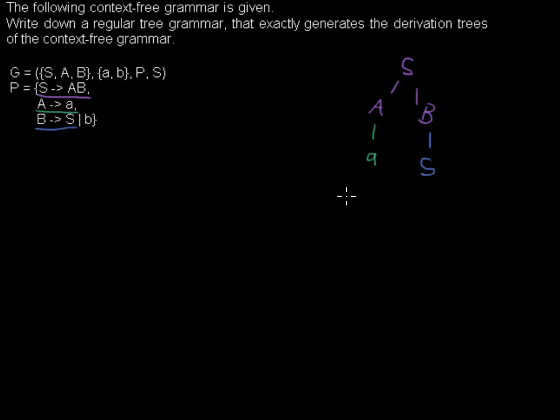Then I will take the first rule again, deriving S to A and B. And of course my A will derive again to a terminal a. And the B, now the B, I will derive the B to the terminal b. And I will get something like this.